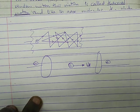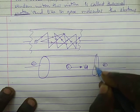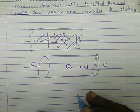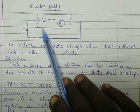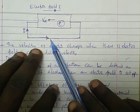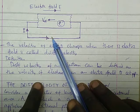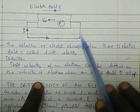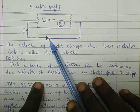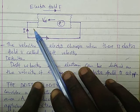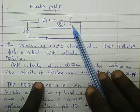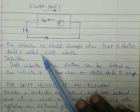Let's derive the expression for the drift velocity. Given the cross-sectional area A of the wire and the electric field across the conductor, the electrons move from the negative terminal towards the positive terminal, while the electric current flows in the opposite direction. So the direction of electric current is opposite to the direction of electron flow. The electric field moves in the same direction as the electric current.